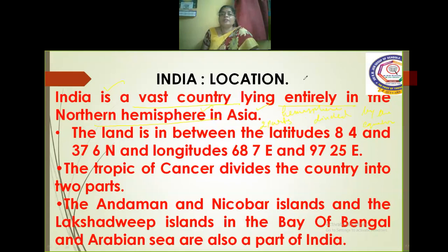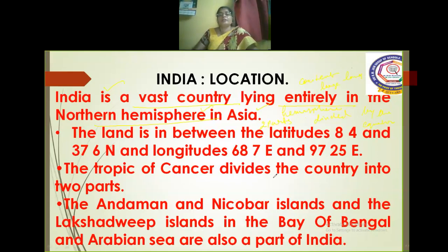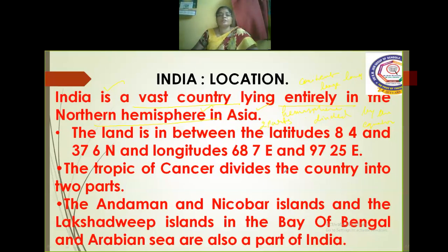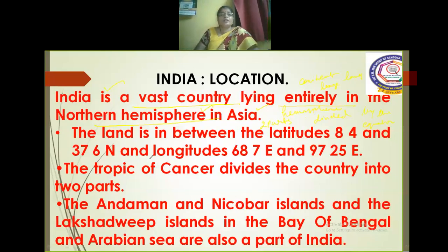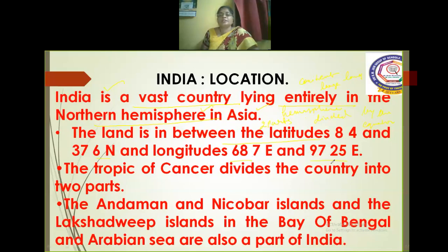A continent is a large landmass formed by tectonic movements, and this landmass called Asia consists of many countries, and India is one of them. India is also called the subcontinent of Asia. The land lies between latitudes 8°4' and 37°6' north, and longitudes 68°7' east and 97°25' east.